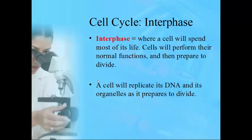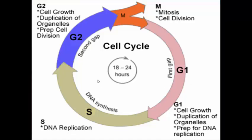Interphase is where a cell spends most of its life — over 90% of a cell's life is in interphase. This is when cells perform their normal function and get ready to divide by replicating their DNA and all the organelles. A generic chart of the cell cycle shows the first three stages — G1, S, and G2 — which are all interphase, followed by mitosis.